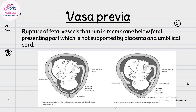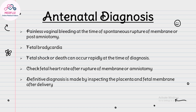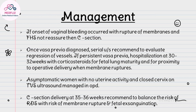Vasa previa is defined as rupture of fetal vessels that run in the membranes below the fetal presenting part, not supported by the placenta or umbilical cord. Associated conditions include velamentous insertion of the umbilical cord, accessory placental lobe, multiple gestation, and placenta previa. Clinical presentation includes painless vaginal bleeding at the time of spontaneous rupture of membranes or post-amniotomy, and fetal bradycardia. Fetal shock or death can occur rapidly. If there is onset of vaginal bleeding with rupture of membranes and FHS are uncertain, proceed to cesarean section.